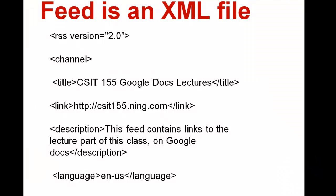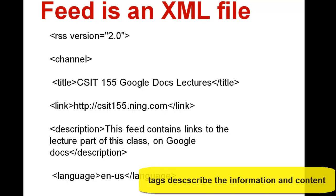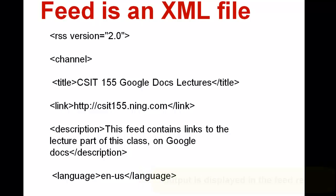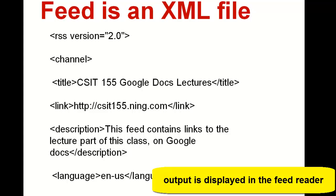This is an example of an XML file. We only have a couple tags visible but you can see that the opening tag is an RSS tag. We have a channel tag, a title, link, description. So the XML file contains descriptive tags which identify the different sections of the information. The reader interprets these tags and displays the output in our feed reader.